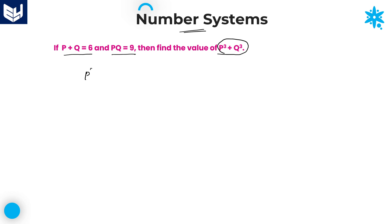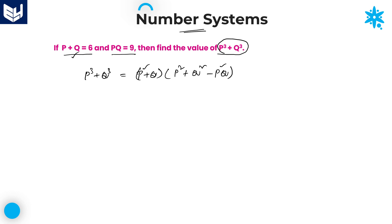First of all, what is p cube plus q cube? p cube plus q cube is equal to p plus q, into p square plus q square minus pq. Here, if you observe carefully, in this formula, we know the value of p plus q and we also know the value of pq. But we don't know the value of p square plus q square.